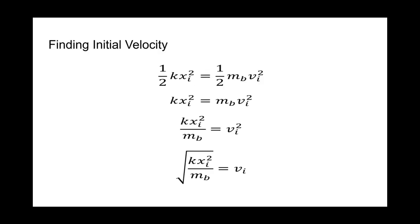The first step was finding the initial velocity. We used the spring potential energy and kinetic energy formulas as a starting point, setting them equal to each other. The one-halves cancel out, leaving us with: the spring constant K times the initial position squared equals the mass of the blue box times the initial velocity squared. We then divide both sides by the mass of the blue box, giving K times Xi squared over mass B equals the initial velocity squared. Taking the square root of both sides gives us the initial velocity: the square root of K times Xi squared divided by the mass of the blue box.